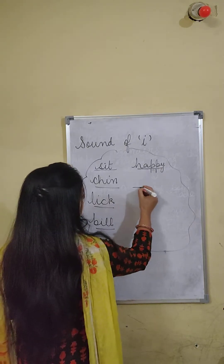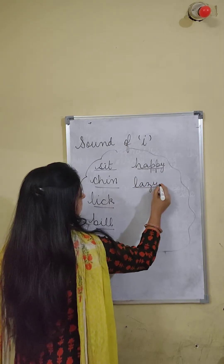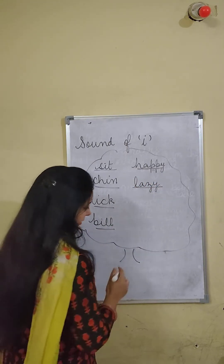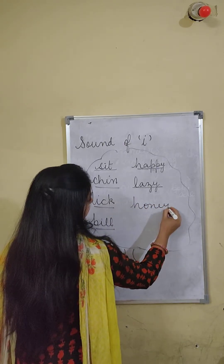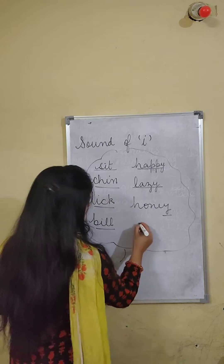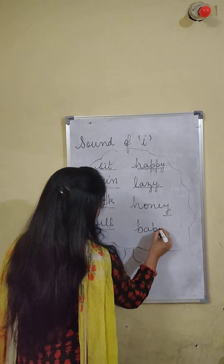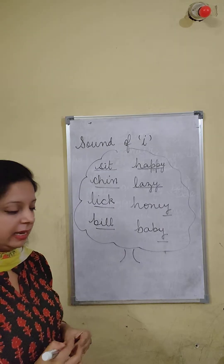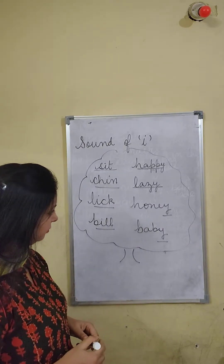On the other side there will be lazy — here Y is sounding like E. Lazy. Honey — Y sounding like E. And the last word would be baby — the sound for Y is E. Baby. Understood?